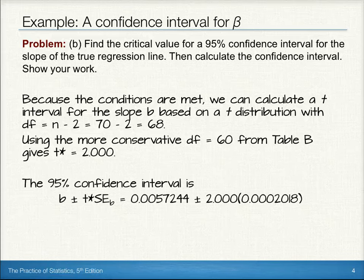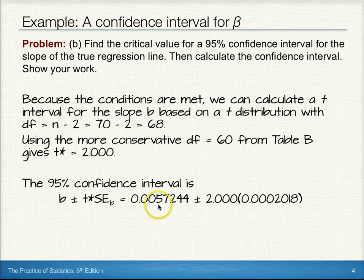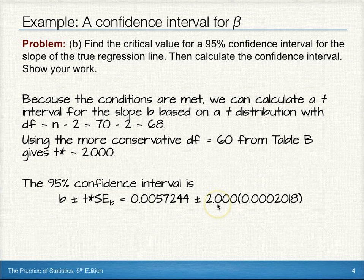So then, the 95% confidence interval for the slope would be our observed slope plus and minus the critical value times the standard error of the slope. We observed a slope of 0.0057244. Our critical value is 2, and as we saw in part a, our standard error of the slope is 0.0002018.